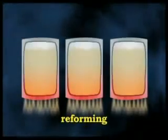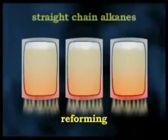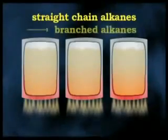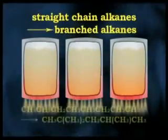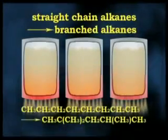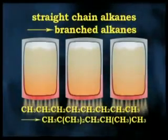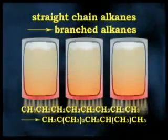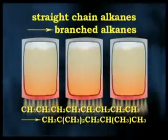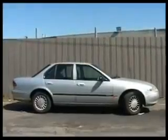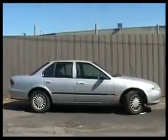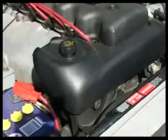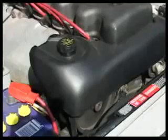Reforming involves the breaking of straight chain alkanes into branched alkanes. The branched chain alkanes in the 6 to 10 carbon atom range are preferred as car fuel. These alkanes vaporise easily in the engine's combustion chamber without forming droplets, and are less prone to premature ignition, which affects the engine's operation.